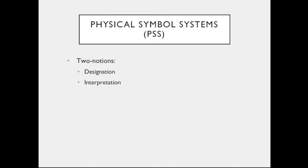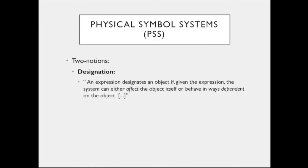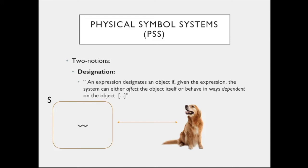Newell and Simon do this by introducing the notions of designation and interpretation. Let's begin with designation. The authors say that an expression designates an object if, given the expression, the system can either affect the object itself or behave in ways dependent on the object. So if this wavy dash is a symbol of system S, and it enables processes in the system to affect Fido the dog, or its behavior in the system is correlated with Fido's behavior, then wavy dash designates Fido in S. Of course, it could also designate another symbol in the system.